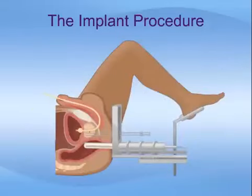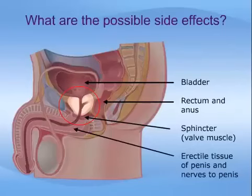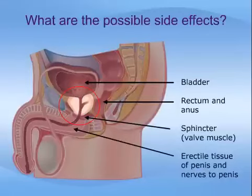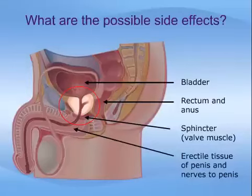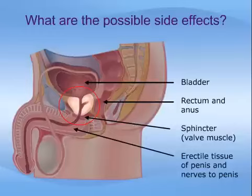This slide shows the typical setup, with the ultrasound probe in place in the rectum to guide passage of the needles containing the radioactive seeds. Refinements in technology and surgical technique allow doctors to place seeds as precisely as possible to maximize radiation to the prostate while limiting exposure to surrounding structures. You can appreciate in this drawing that several important organs lie immediately next to the prostate: the bladder, the rectum and anus, the urinary sphincter or valve muscle, and the erectile tissues and nerves of the penis. Radiation to any of these can lead to certain side effects.